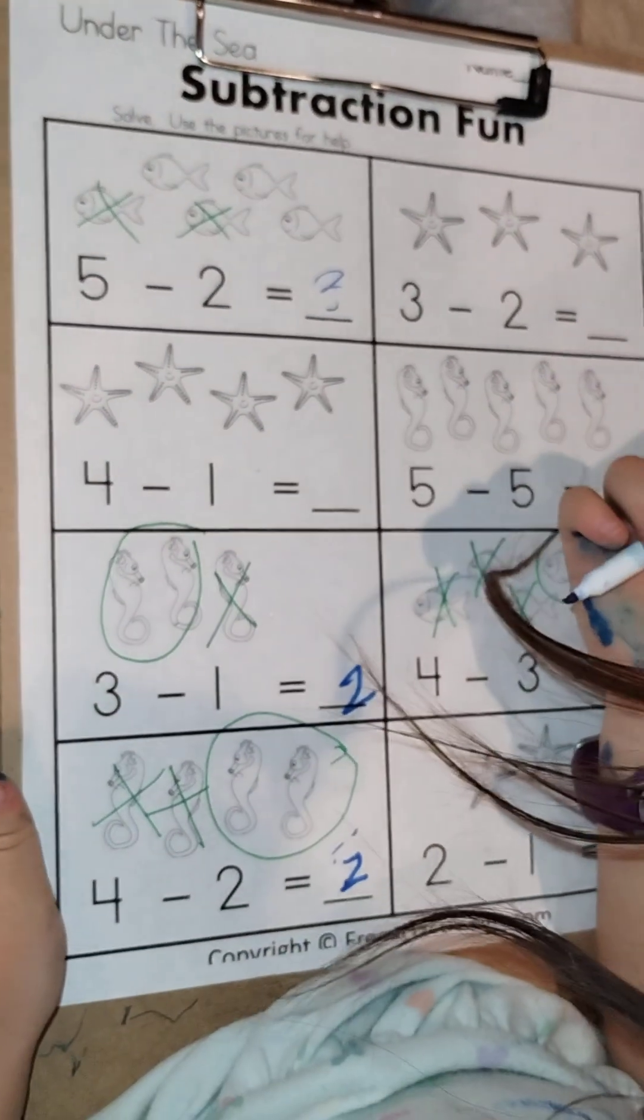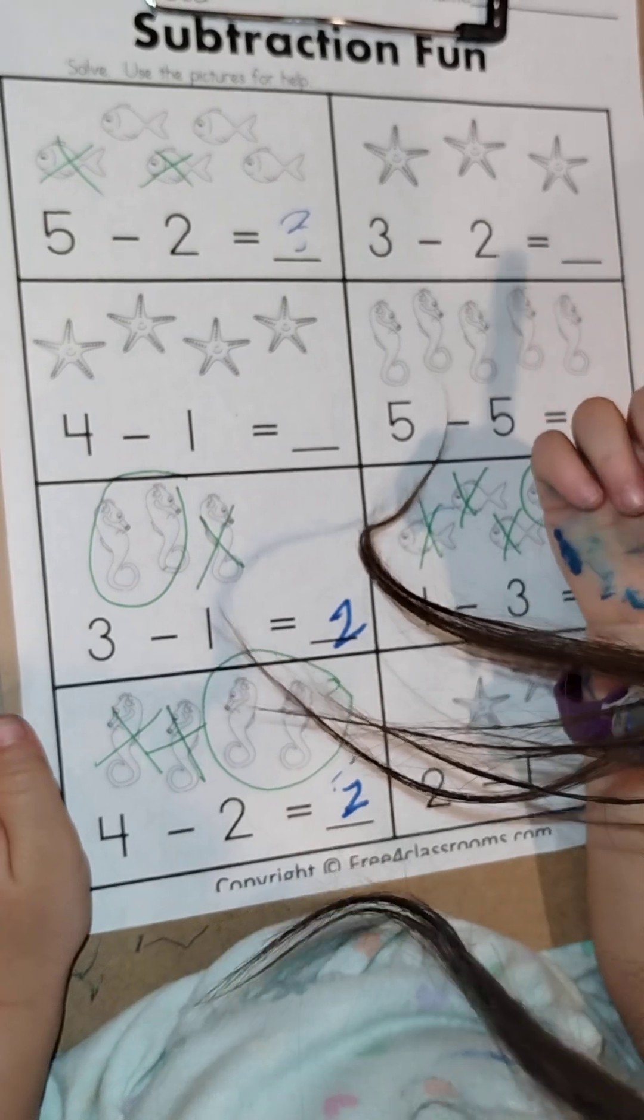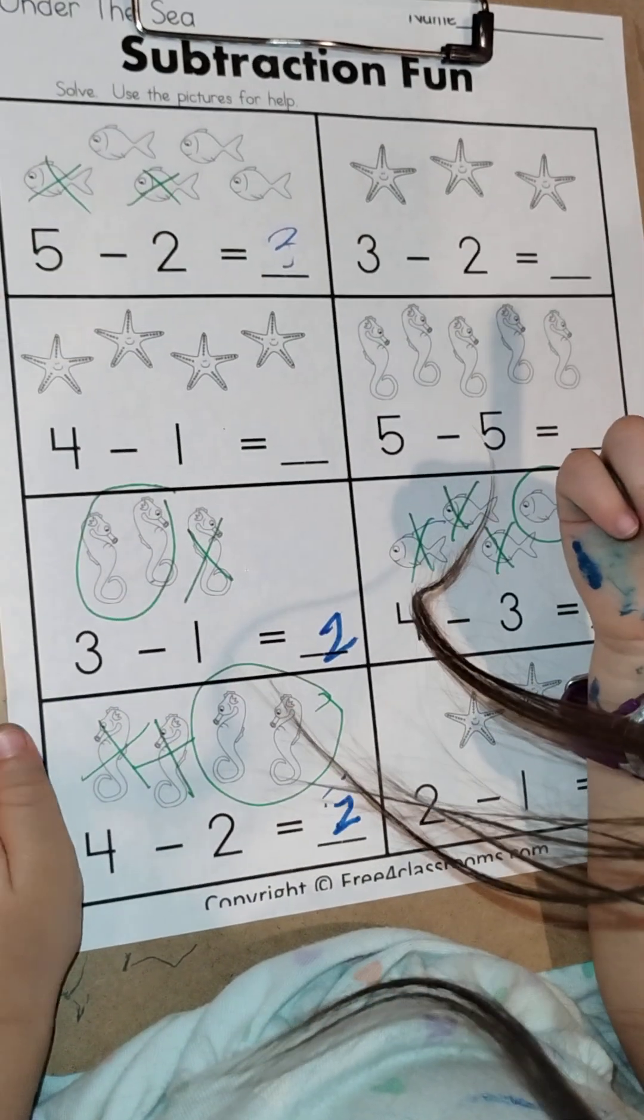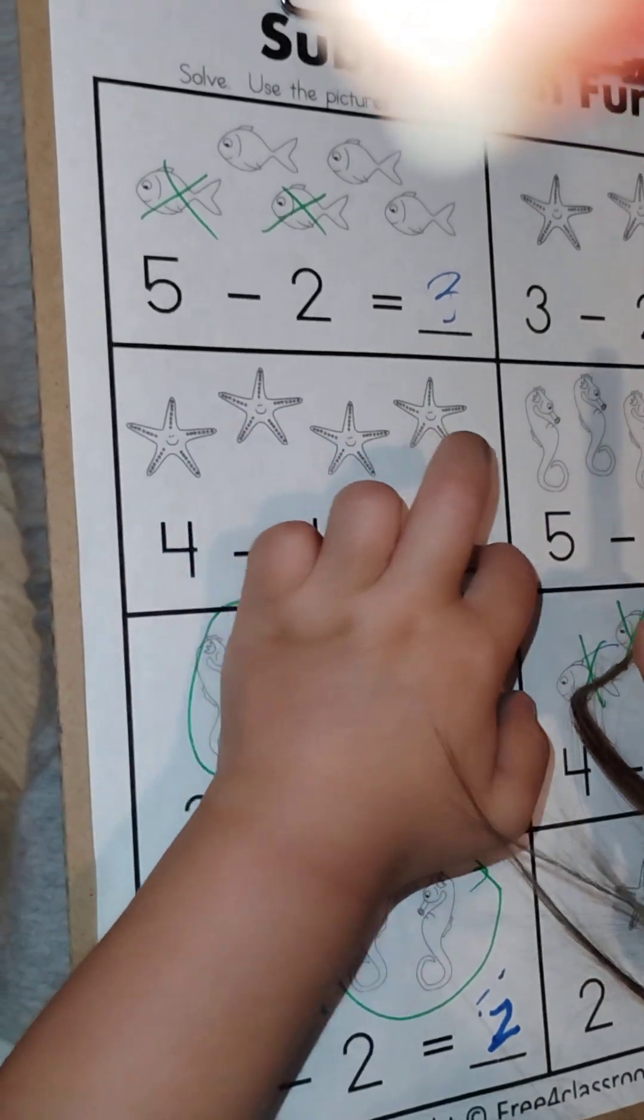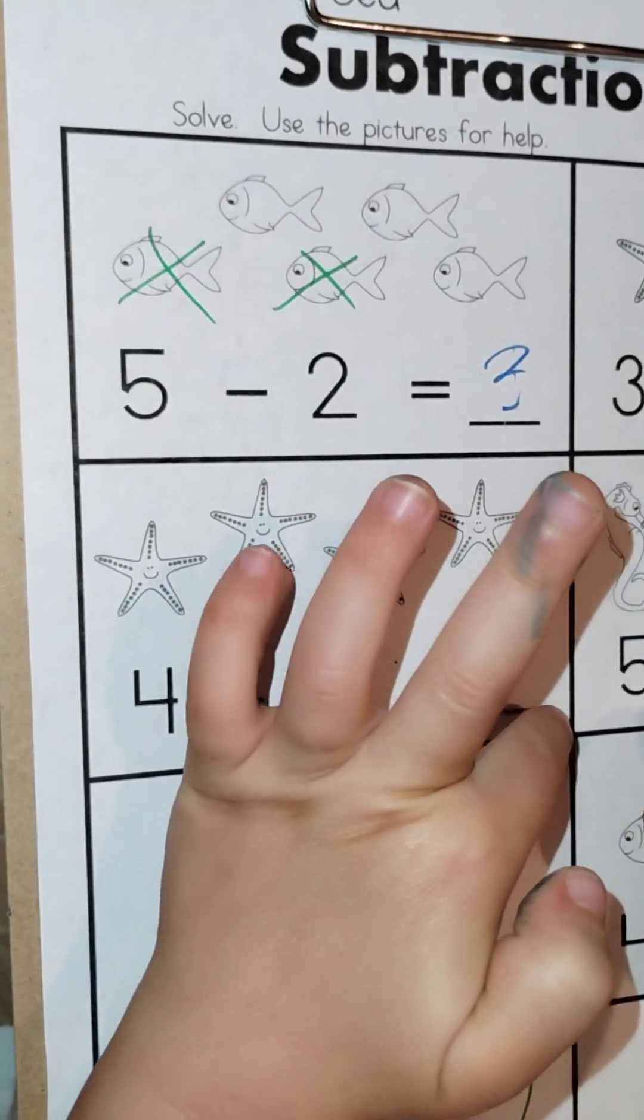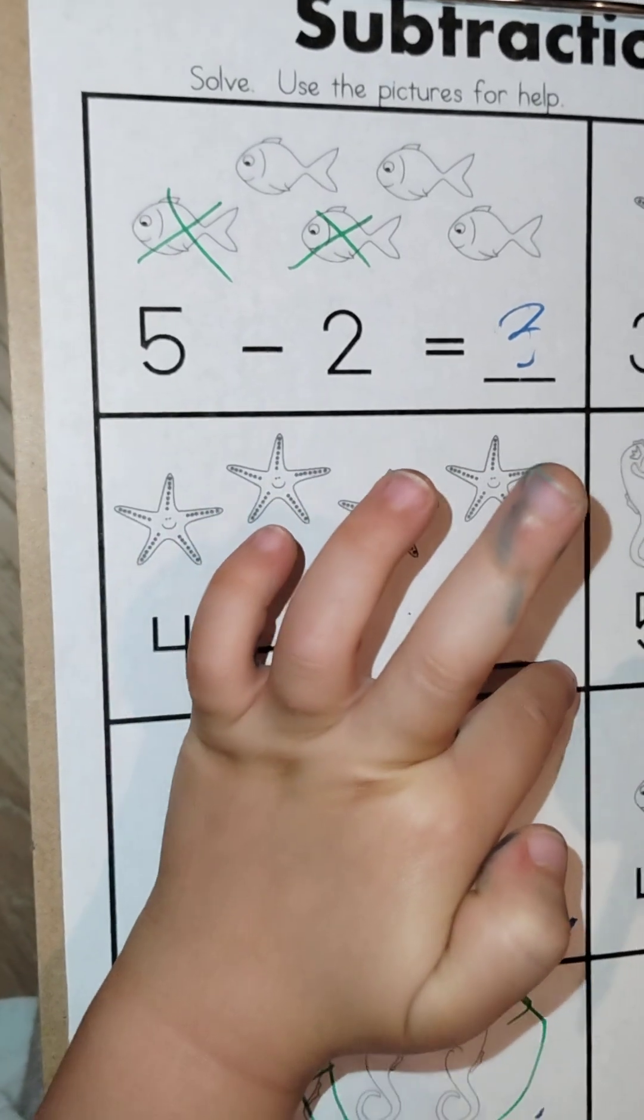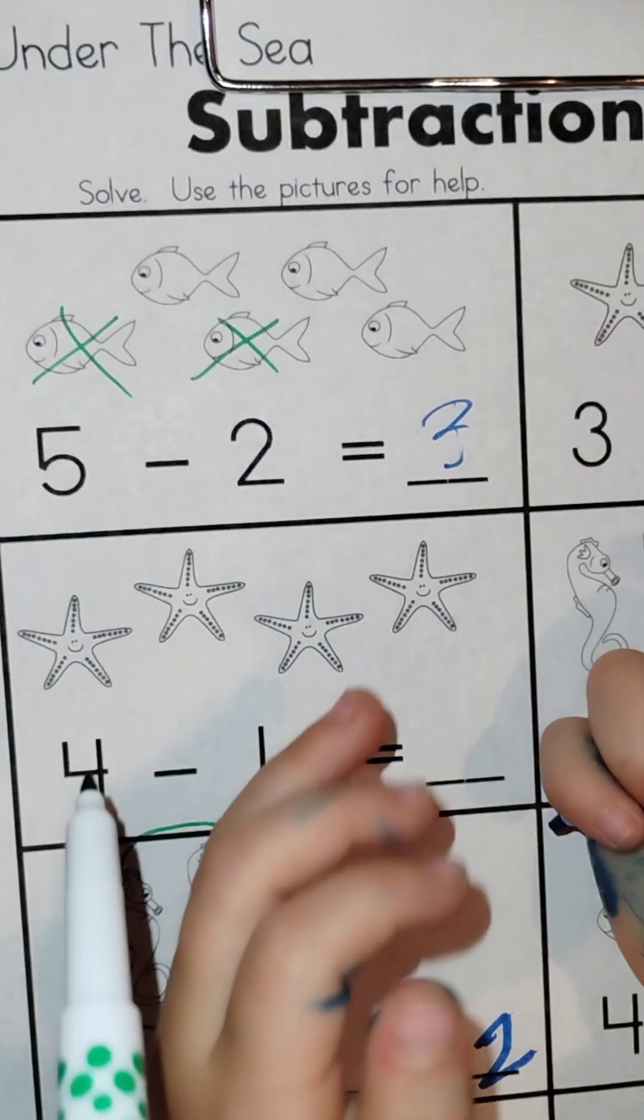You want to do this one? Four minus one equals what number? Four minus one equals what number? Three, you're right! Yes, good job.